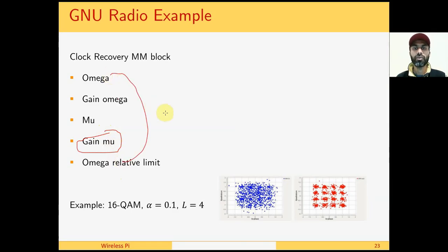As an example, we implement a Mueller and Muller TED for a 16-QAM modulation with excess bandwidth alpha equals 0.1 and four samples per symbol as the input. We can see that there is a lot of inter-symbol interference present in the input signal to a timing lock loop. However, after convergence, we can clearly see that there are 16 different points which represent the constellation mapping.